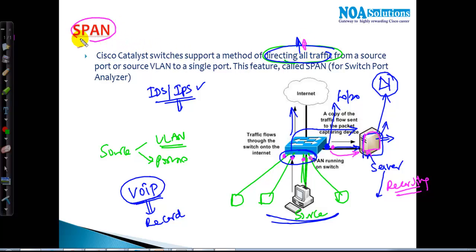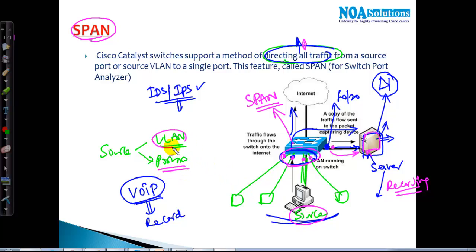To make all these things possible we can enable a feature called SPAN on the switches. What it does is direct all your traffic from the source — which can be one single port number or a complete VLAN — to a different destination port where you have a server, an IDS/IPS device, for recording, intrusion detection, database collection, or applications like voice recording.